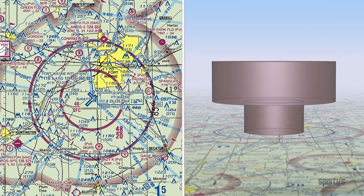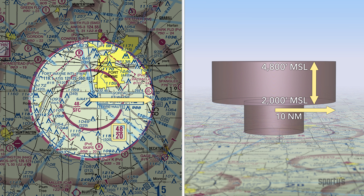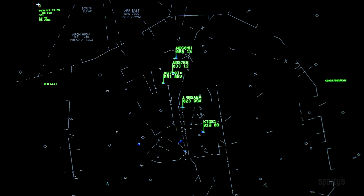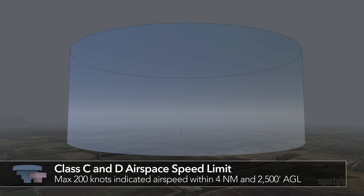This is the Class C area surrounding the Fort Wayne International Airport. The first layer, called the inner circle, begins at the surface and extends to the top at 4,800 feet MSL. The inner circle has a radius of 5 nautical miles from the airport. The second layer has a radius of 10 nautical miles and has a base of 2,000 feet MSL. Traffic advisories are provided to all aircraft in Class C. In Class C and Class D, unless otherwise authorized, you may not exceed 200 knots indicated airspeed within 4 nautical miles of the primary airport at or below 2,500 feet AGL.